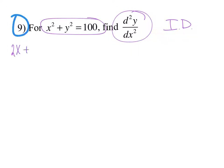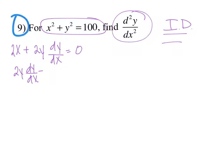So 2x plus 2y dy/dx is equal to 0. We derive and then we isolate. So let's isolate: 2y dy/dx is equal to negative 2x, and dy/dx is equal to negative x over y.